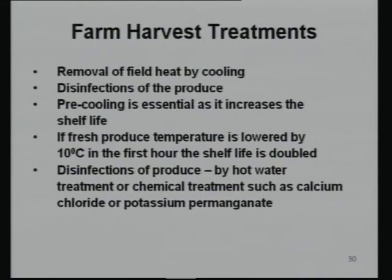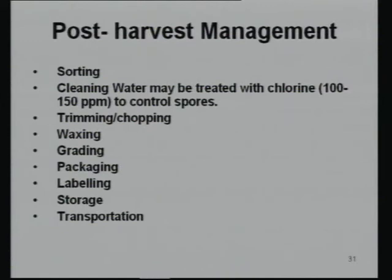At the farm level, removal of field heat is important. Lowering temperature by 10 degrees centigrade almost doubles shelf life, so pre-cooling is essential. Disinfection using hot water treatment, potassium permanganate, or calcium chloride can also be done at the farm level. Post-harvest management techniques include sorting, cleaning with chlorinated water, trimming, waxing, grading, packaging, labeling, storage, and transportation.